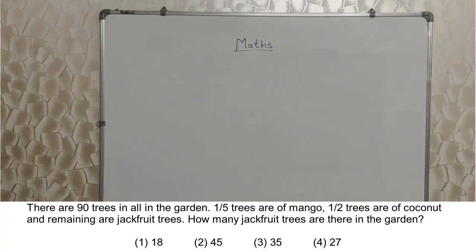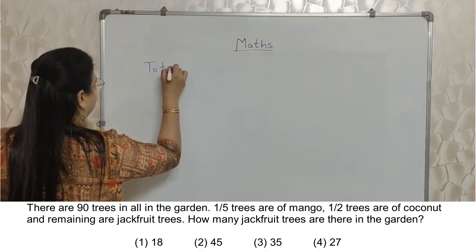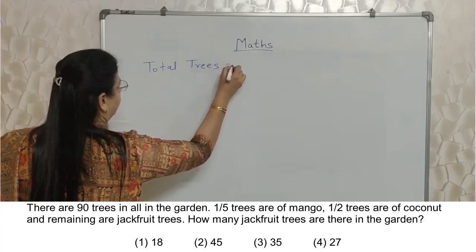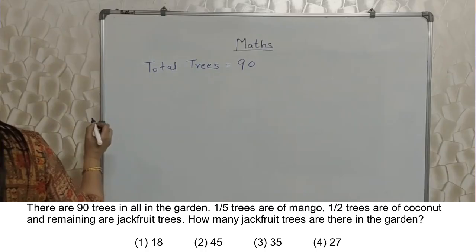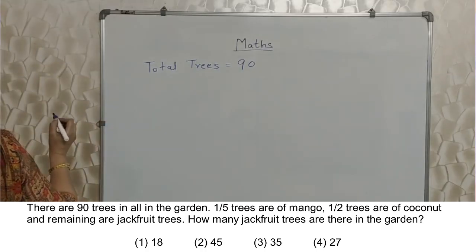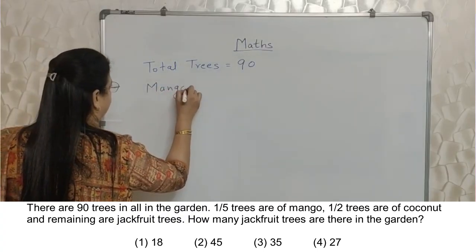There are 90 trees in all in the garden. 1 upon 5 trees are of mango, 1 upon 2 trees are of coconut, and remaining are jackfruit trees. How many jackfruit trees are there in the garden? Total trees how many? Here we are learning, so I am writing this stepwise. There, if you know the concept, you can straight away start calculation and save time.